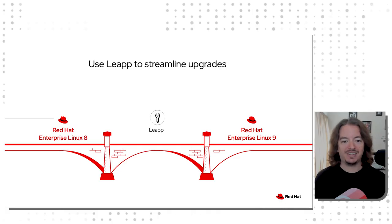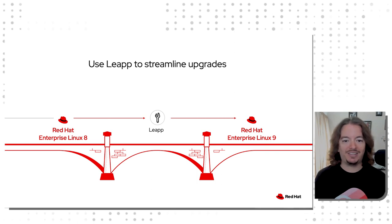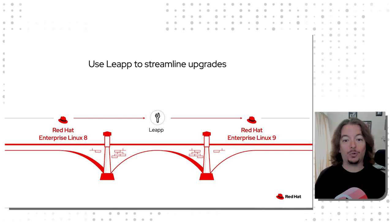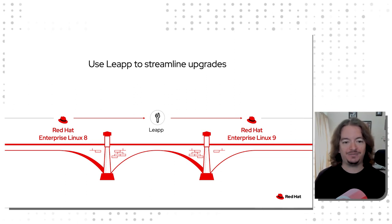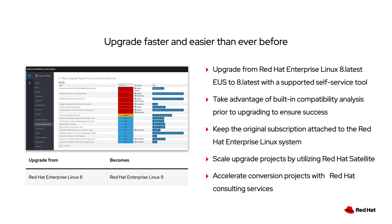That is where Leap comes on the scene. Install the Leap utility, run the upgrade check, and let the Leap tool do the rest. You can take your instance from RHEL 8 to RHEL 9 EUS releases, or extended update support — these are typically every even-numbered release. It doesn't matter if you're using the built-in Leap command line tool or integration with Red Hat Satellite.